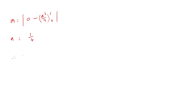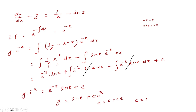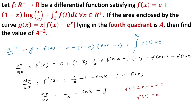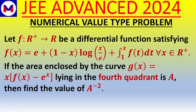Therefore A = 1/4, so A² = 1/16, and A^(-2) = 16. This is the answer to the given question: the value of A^(-2) is 16. Hope you understood it well — thank you.